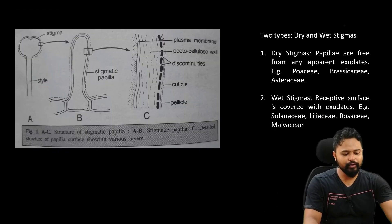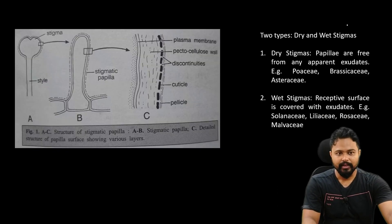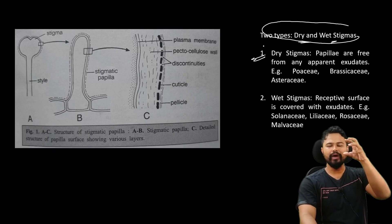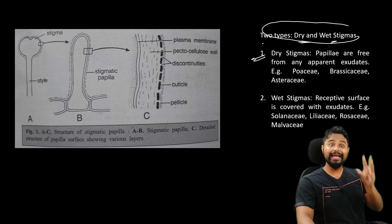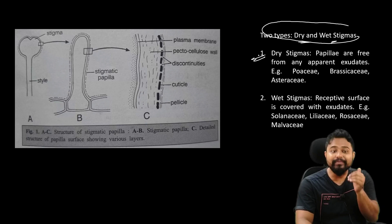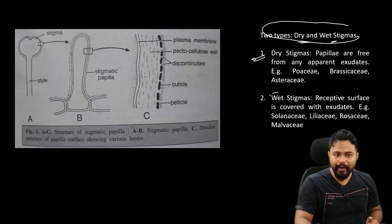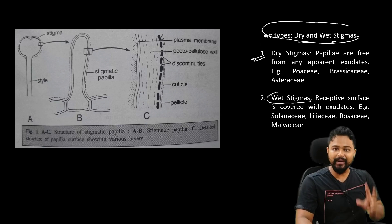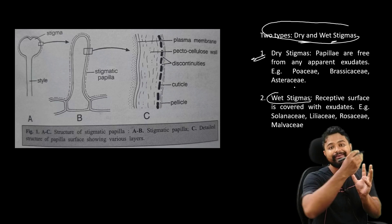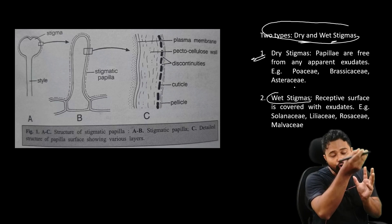Next is stigma surface type — dry and wet stigma. Dry stigma means it is relatively dry, whereas wet stigma is wet. Dry stigma is dry; wet stigma is more moist.